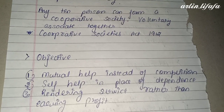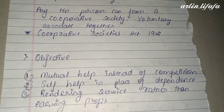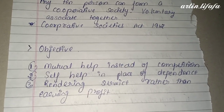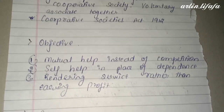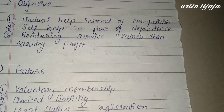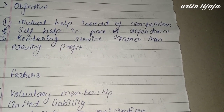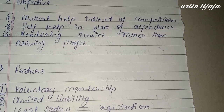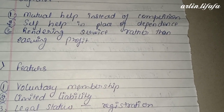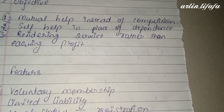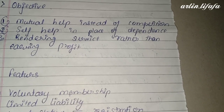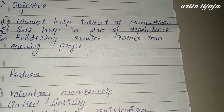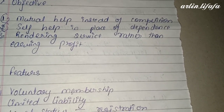Cooperative society का main काम mutual benefit और mutual help देना है — companies को, लोगों को, हर तरह के person को business set up और start करने में। इसके objectives: mutual help instead of competition, self help in place of dependence — खुद की self help करना बेहतर है किसी और पर depend होने से।